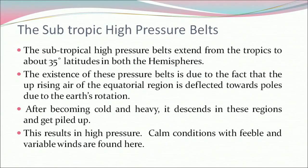The subtropical high pressure belt extends from the tropics to about 35 degrees latitude in both hemispheres. The existence of these pressure belts is due to the fact that the uprising air of the equatorial region is deflected towards the poles due to the earth's rotation. After becoming cold and heavy, it descends in these regions and gets piled up, resulting in high pressure. Calm conditions with feeble and variable winds are found here.